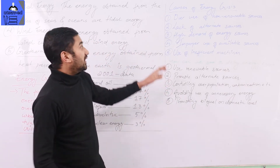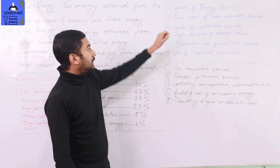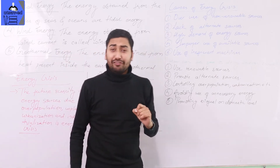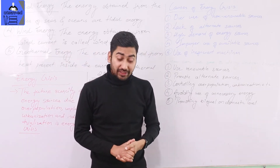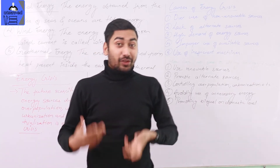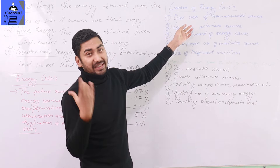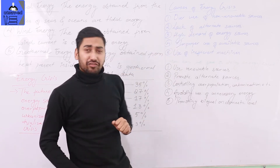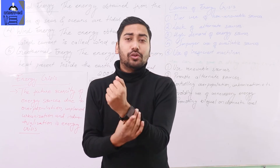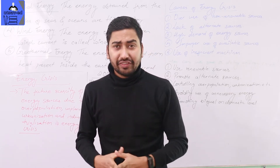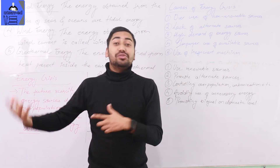So the causes of energy crisis: the first cause is the overuse of non-renewable sources of energy, which are going to be exhausted. The second cause is lack of alternative sources of energy — if we do not develop alternative forms of energy to replace non-renewable ones, the energy supply is going to run out.